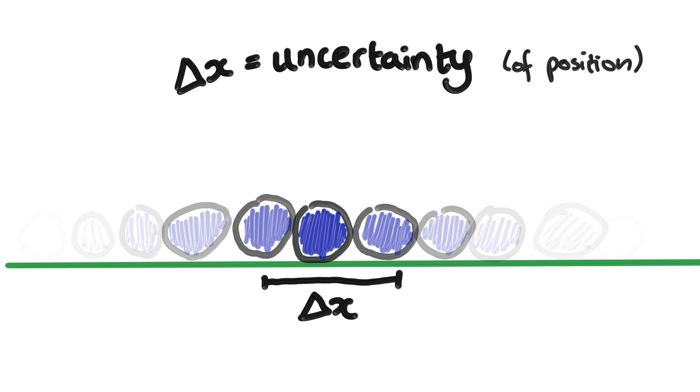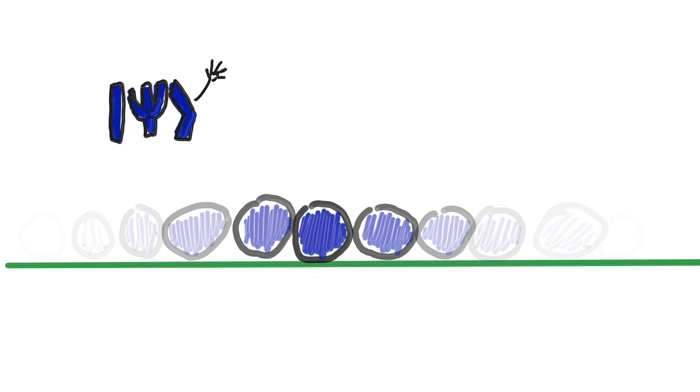This is probably why the term uncertainty is used to describe delta x, because it means how much we're uncertain about what result we would have if we were to measure it. I just don't like that word because of the connotation that the particle really is in one place but we didn't have enough knowledge to know where. No, even with all the knowledge that quantum mechanics says is possible for anyone, there is still this randomness when you measure.